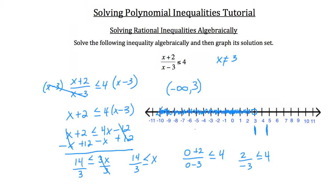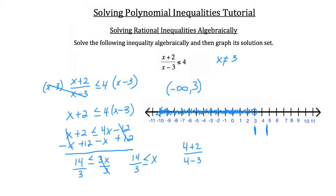Now let's try a point greater than 3. We don't need to check 3 itself since x cannot equal 3. I'll choose 4, a convenient point between 3 and 4 and 2/3. Plugging into the original: (4 plus 2) over (4 minus 3) is 6 over 1 equals 6, and 6 is less than or equal to 4 — that's not true. So we're not going to shade between these two points.